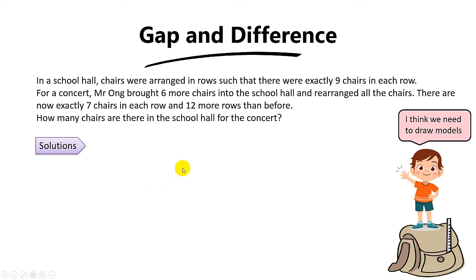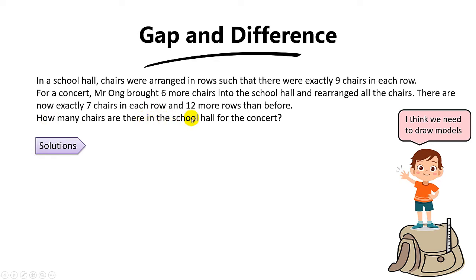Let's look at this question on gap difference, which is actually from a past PSLE paper. This type of question can come out in the PSLE, so let's go through it. In the school hall, chairs were arranged in rows such that there were exactly nine chairs in each row. For the concert, Mr Ong brought six more chairs into the school hall and rearranged all the chairs. There are now exactly seven chairs in each row and 12 more rows than before. How many chairs are there in the school hall for the concert?